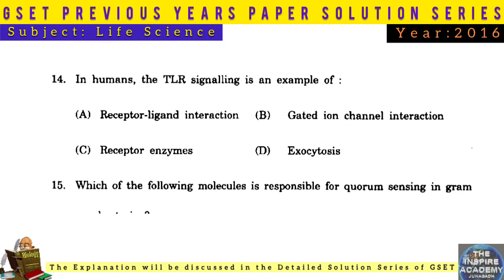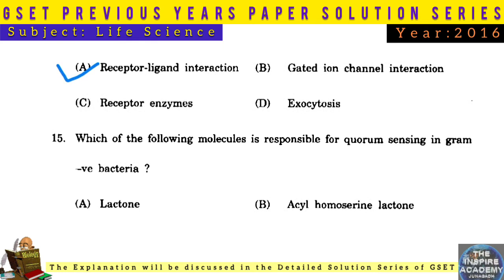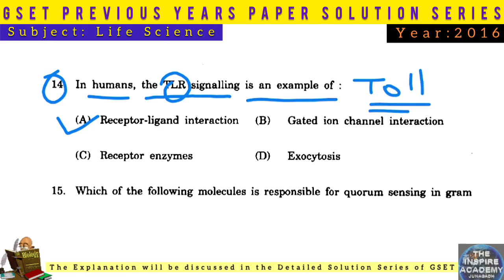Question No. 14: In humans, the TLR signaling is an example of receptor-ligand interaction. TLR signaling means Toll-like receptor signaling.